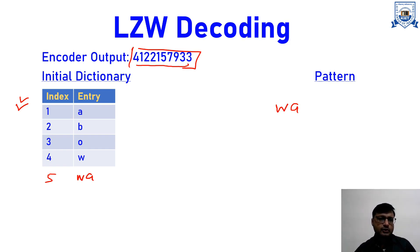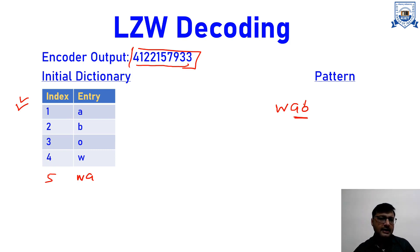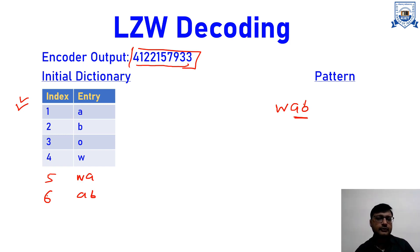Next index is 2 — 2 is B, so we put B. We now look at A and B: AB is not there in the dictionary, so we add index 6 as AB. Every time we are getting a decoded letter we concatenate it with the existing pattern and add the new entry to the dictionary. Moving ahead, next is again 2 — so again B. The previous letter was B and the new letter is also B, so we add BB at the next dictionary entry.